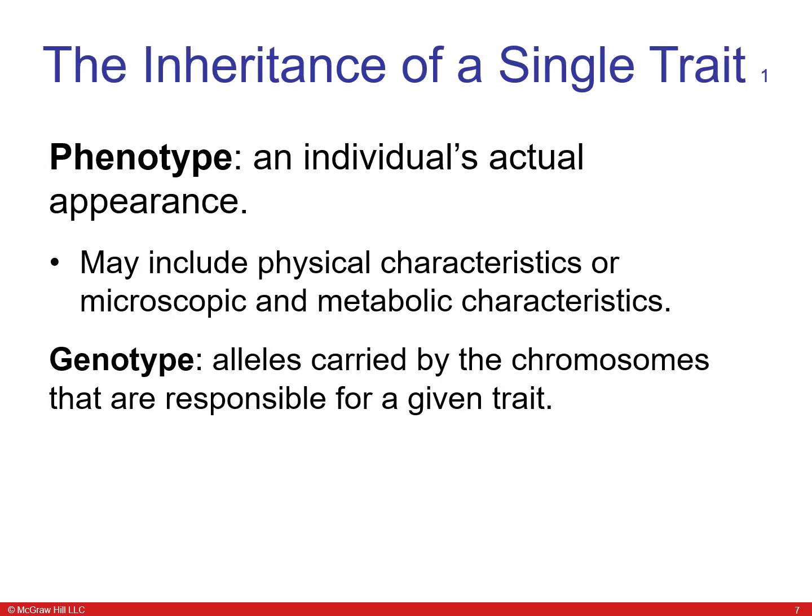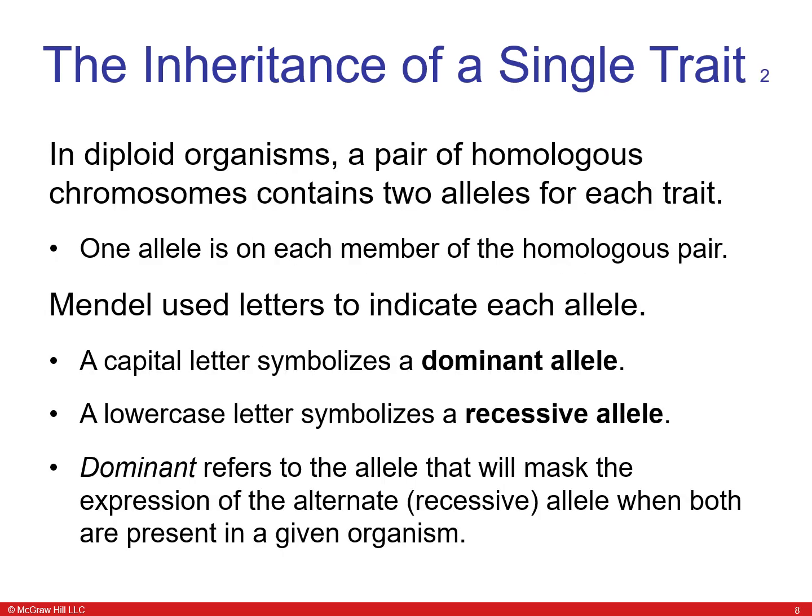The phenotype is an individual's actual appearance, which may include physical, microscopic, or metabolic characteristics. The genotype refers to the alleles carried by the chromosomes responsible for a given trait. In diploid organisms such as humans, a pair of homologous chromosomes contains two alleles for each trait. A capital letter symbolizes a dominant allele and a lowercase letter symbolizes a recessive allele. Dominant refers to the allele that will mask the expression of the alternate or recessive allele when both are present.